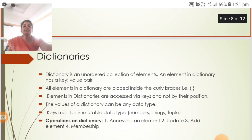Next is dictionaries. A dictionary is an unordered collection of elements. An element in a dictionary has a key-value pair. All elements in a dictionary are placed inside curly braces. Elements in dictionaries are accessed via keys and not by their position. The values of a dictionary can be any data type. Keys must be immutable data types.